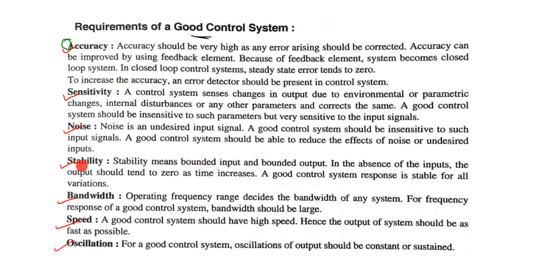Fourth, stability — stability means bounded input and bounded output. In the absence of input, the output should tend to zero as time increases; if no input is applied then there should be no output. A good control system response is stable for all variations. If the output of the system is very accurate then the stability of the control system is very high.